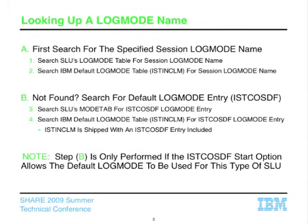To summarize the full process of looking up a log mode name: first, we look for the specified session log mode name, looking it up in the SLU's log mode table first, and if not found there, in the IBM default table IST-INCLM. If we don't find it in either table, and this applies when the log mode name was specified for DLOGMODE as well, then we search for a log mode entry called IST-COSTDF, which provides the default class of service entries. We search the SLU's log mode table first, and if it's not there, we search the IBM default log mode table. We ship IST-INCLM knowing it contains IST-COSTDF, so unless you forgot to compile it or deleted it, we know we'll find it.